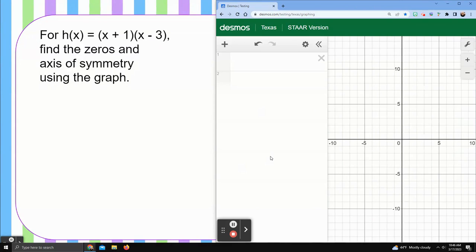Hi there. My name is Dr. Marissa May. In this video, we're going to be looking for the zeros and axis of symmetry for the graph H of X equals X plus one times X minus three.